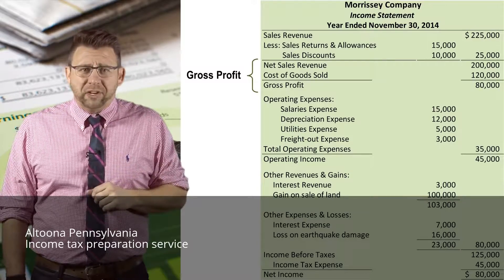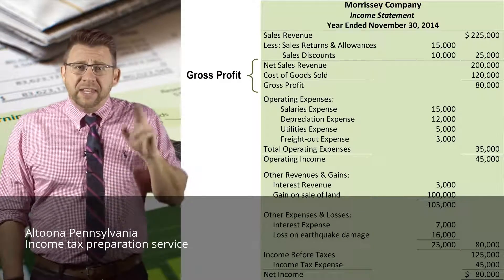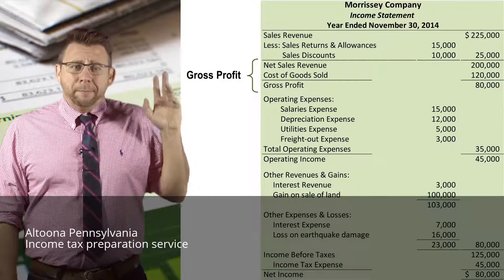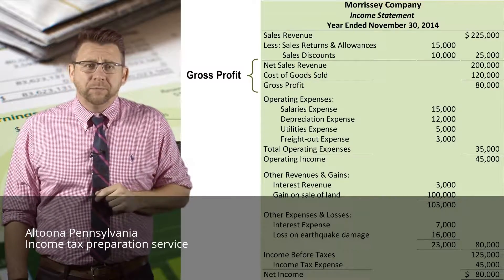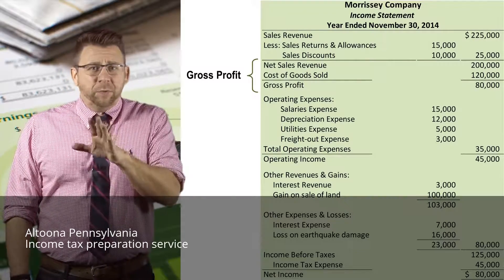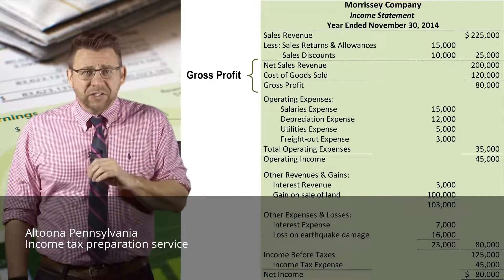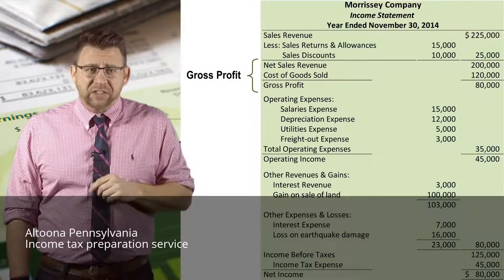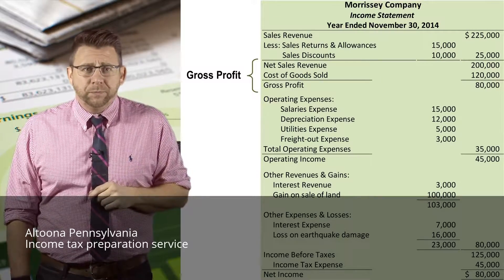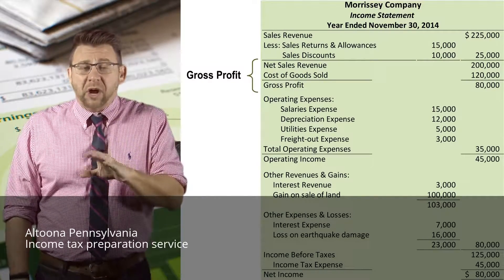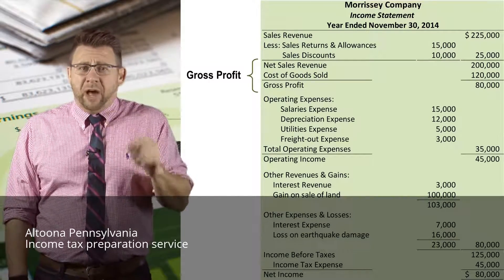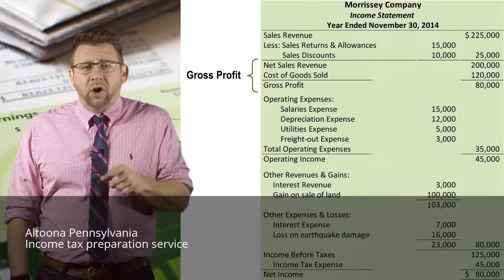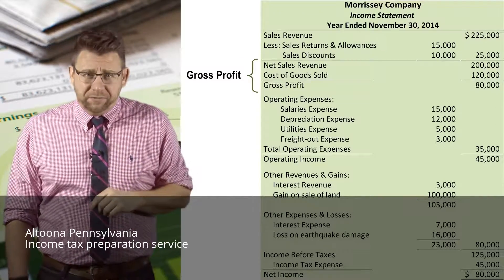The next important subtotal is gross profit. This is calculated by taking net sales revenue minus cost of goods sold. At this point, cost of goods sold is the only expense deducted in this section. Gross profit is the amount that inventory was sold for more than the cost of inventory.